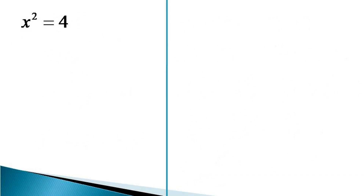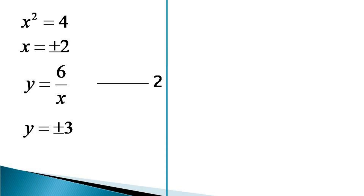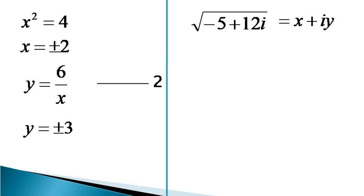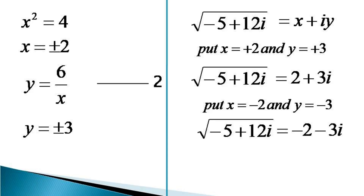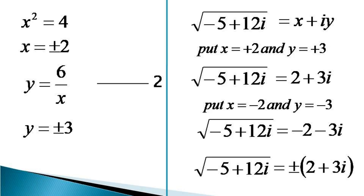From here, we get x is equal to plus or minus 2, and applying equation 2, we get y values as equal to plus or minus 3. Observing equation 2, the sign of both sides must be the same, meaning x and y should have the same signs. So putting x equal to plus 2 and y equal to plus 3, the square root of minus 5 plus 12i becomes equal to 2 plus 3i. And putting x equal to minus 2 and y equal to minus 3, the square root becomes minus 2 minus 3i. Therefore, the square root of minus 5 plus 12i is equal to plus or minus (2 plus 3i).